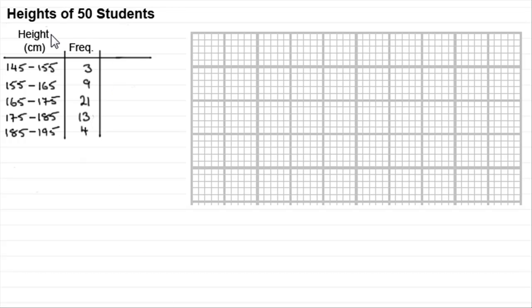Now suppose we had the heights of 50 students, where their height is given in centimeters and we've got a grouped frequency table here. It's important to remember what we mean by this dash here. Take for instance this row where we've got 165 with a dash to 175.